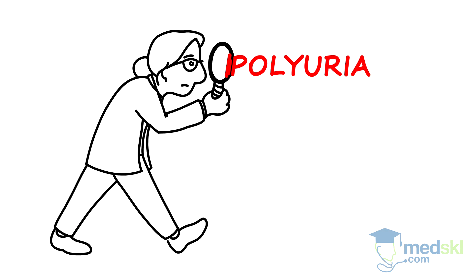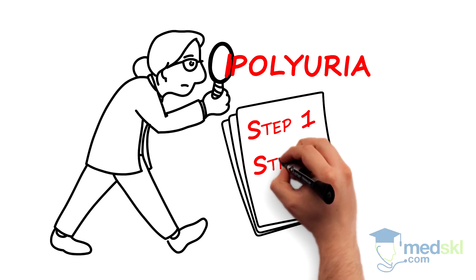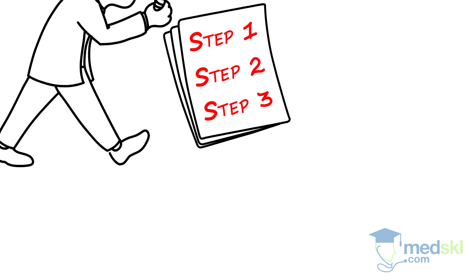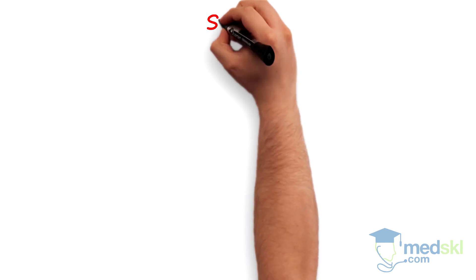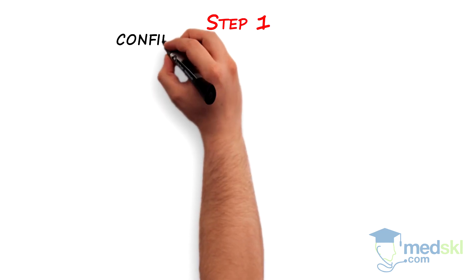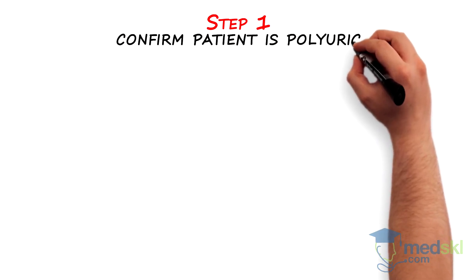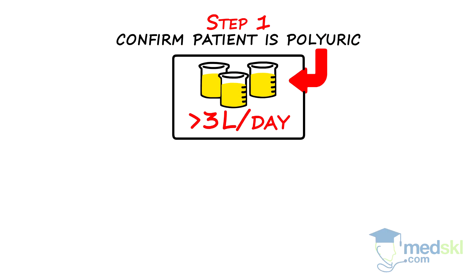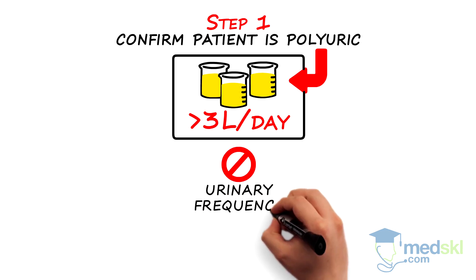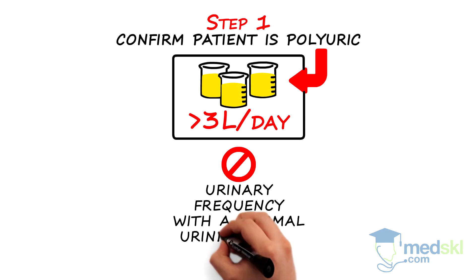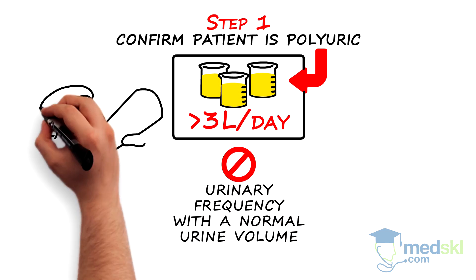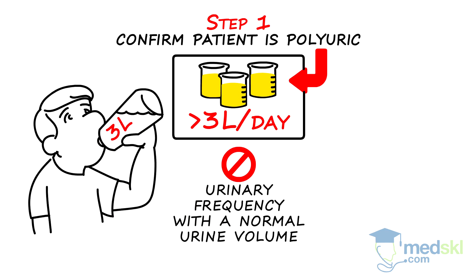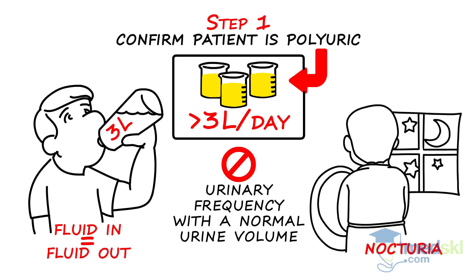Investigating polyuria requires an organized approach. Step 1: First, confirm that the patient actually is polyuretic, i.e. making more than 3 liters a day, and doesn't just have urinary frequency with a normal urine volume. Are they drinking more than 3 liters a day? If they're in steady state, fluid in equals fluid out. They should have nocturia as well.